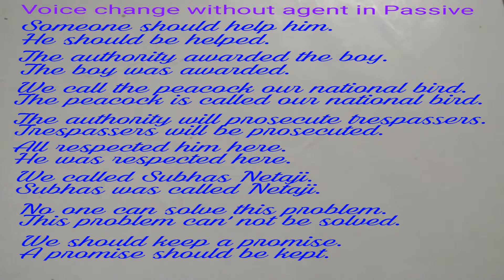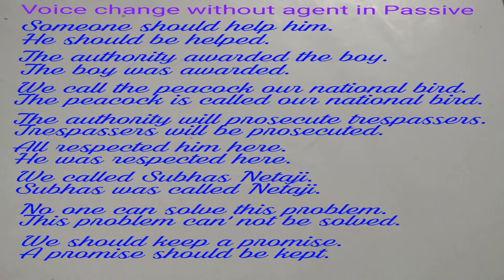Example 3: 'We call the peacock our national bird.' This is in active. Passive will be: 'The peacock is called our national bird.' We need not write 'by us' here.